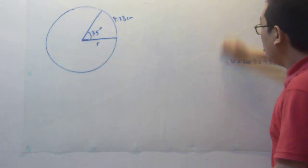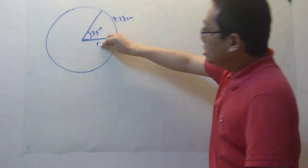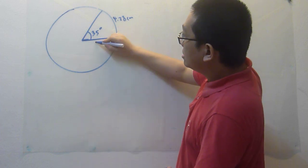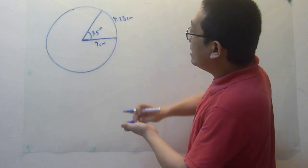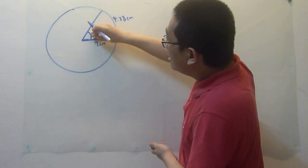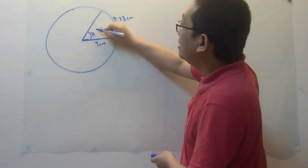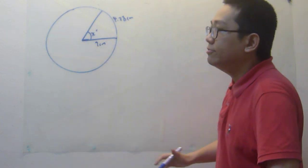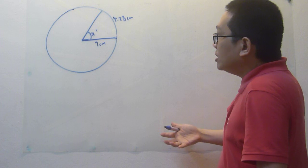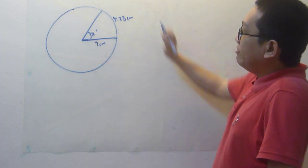So how about if the question gives you the radius, and the degree is the one that you need to find, and the minor arc remains as 4.28? For this question, how do I find the 4.28?